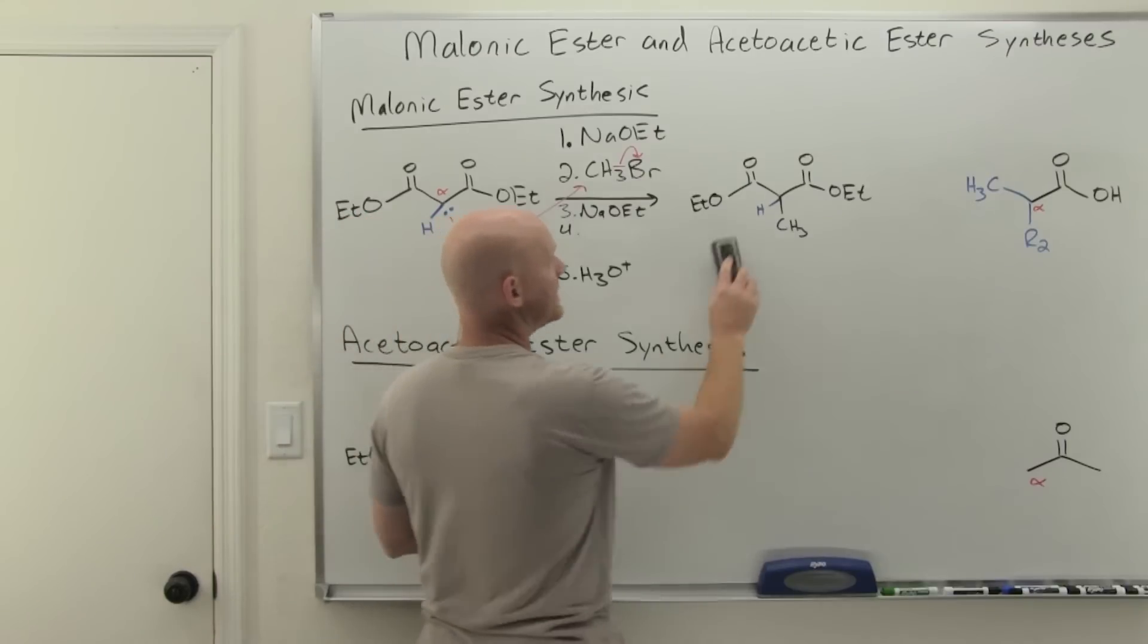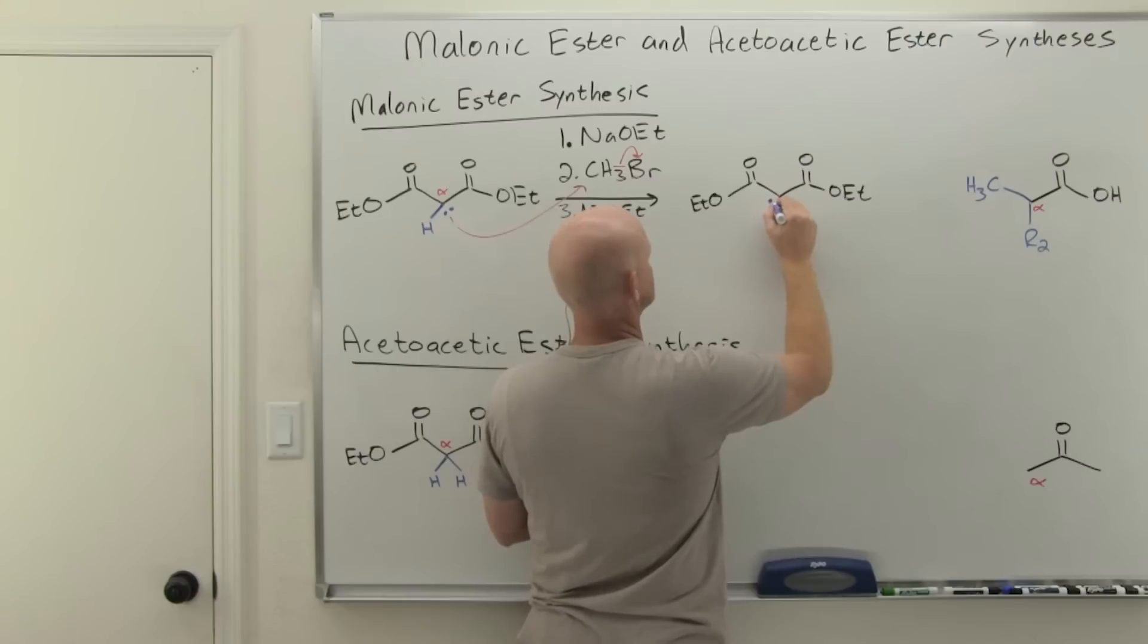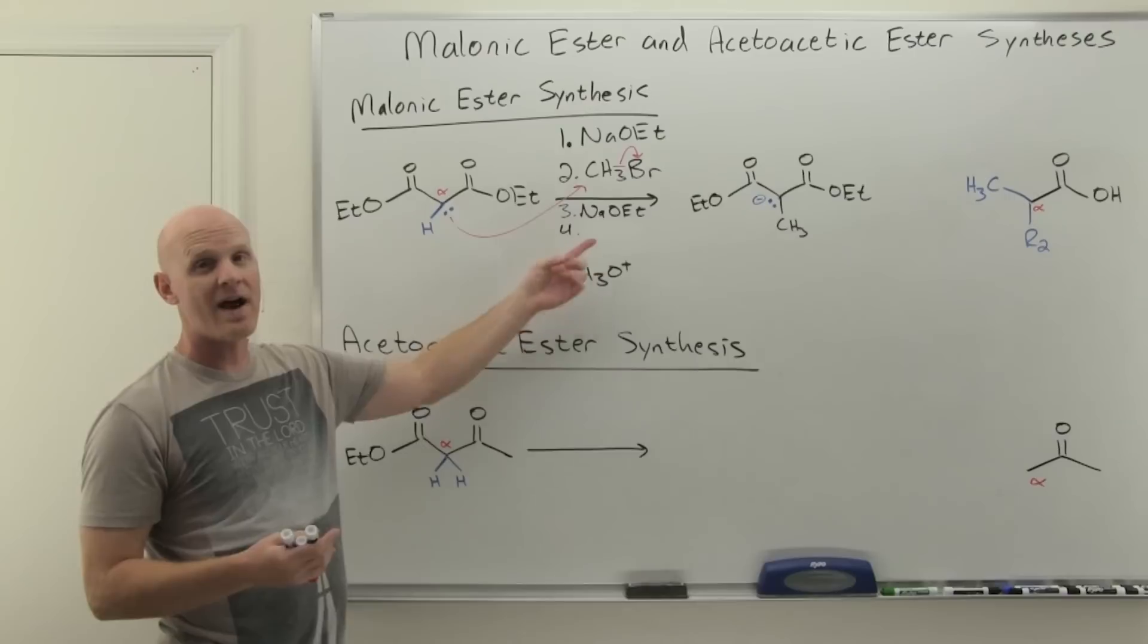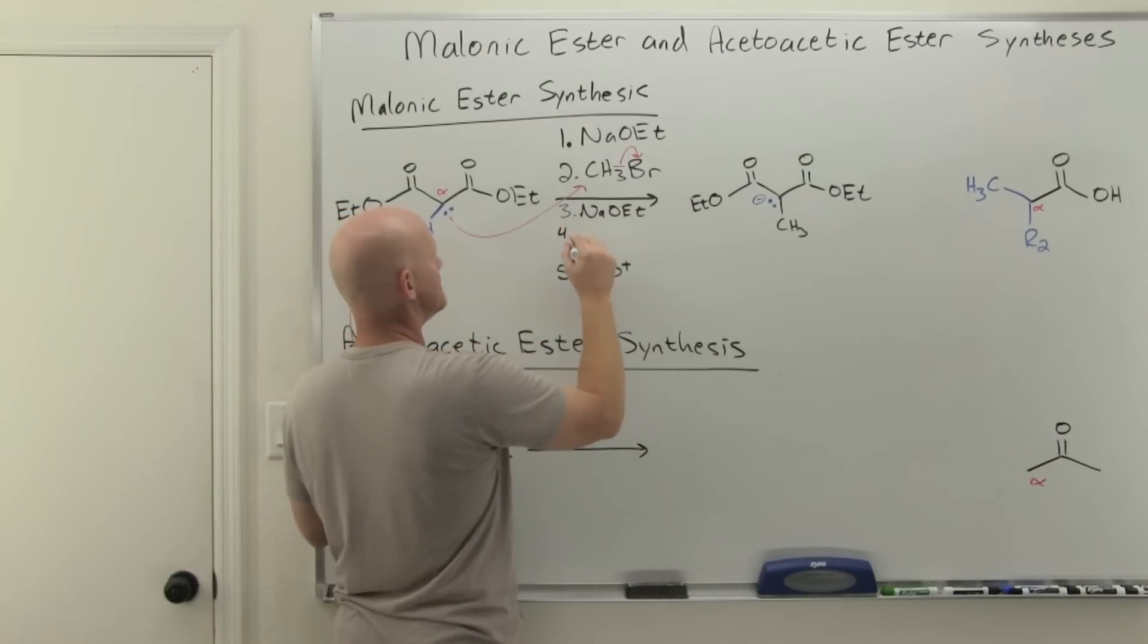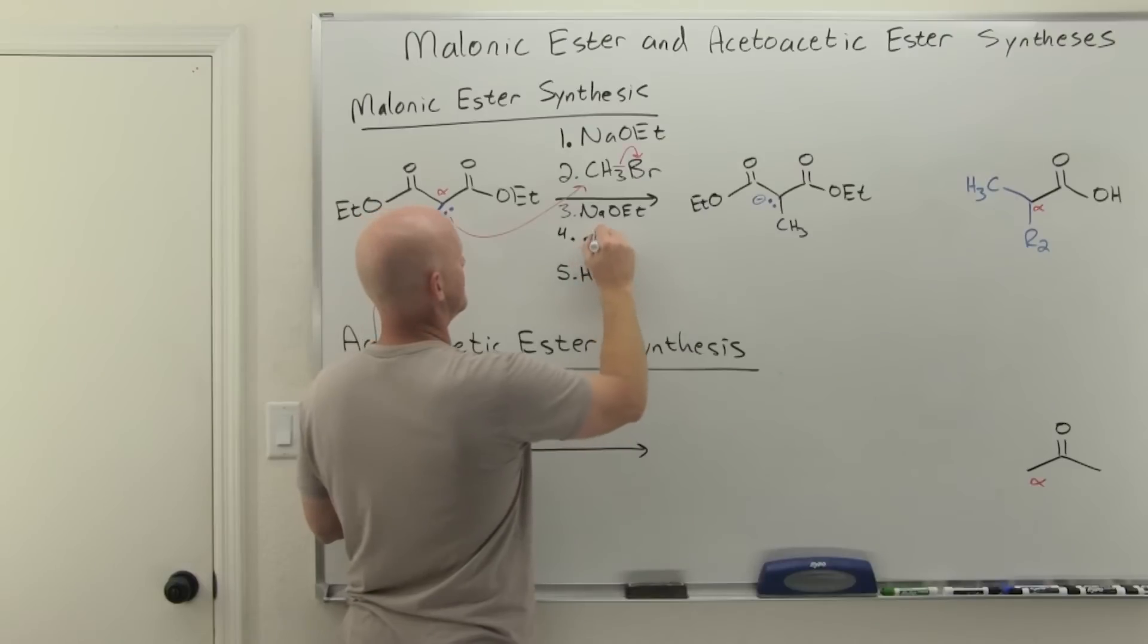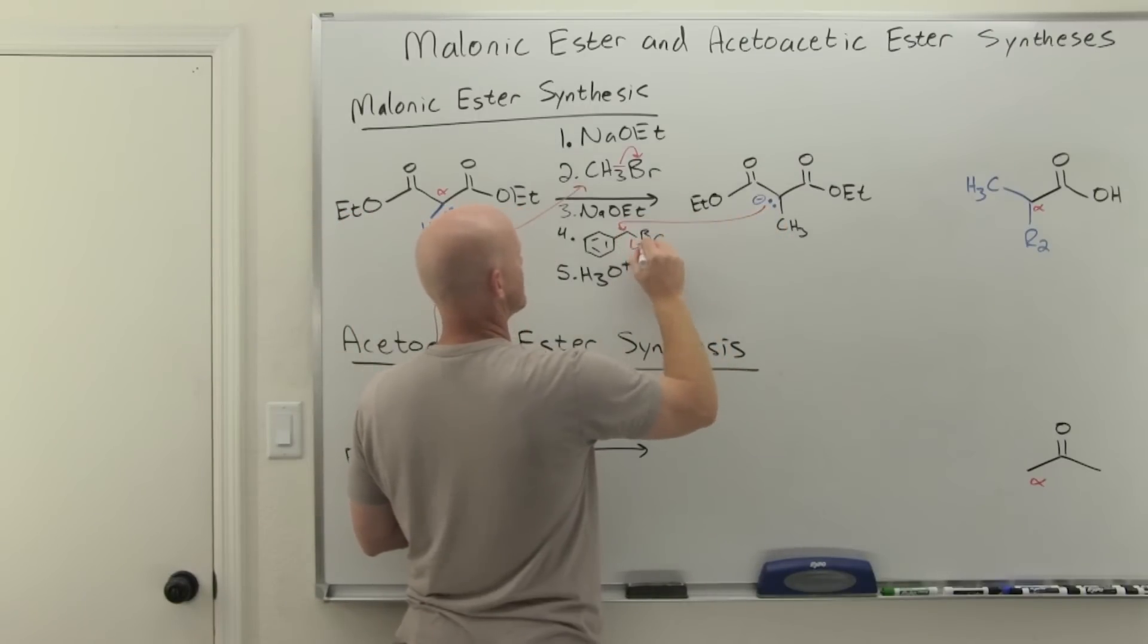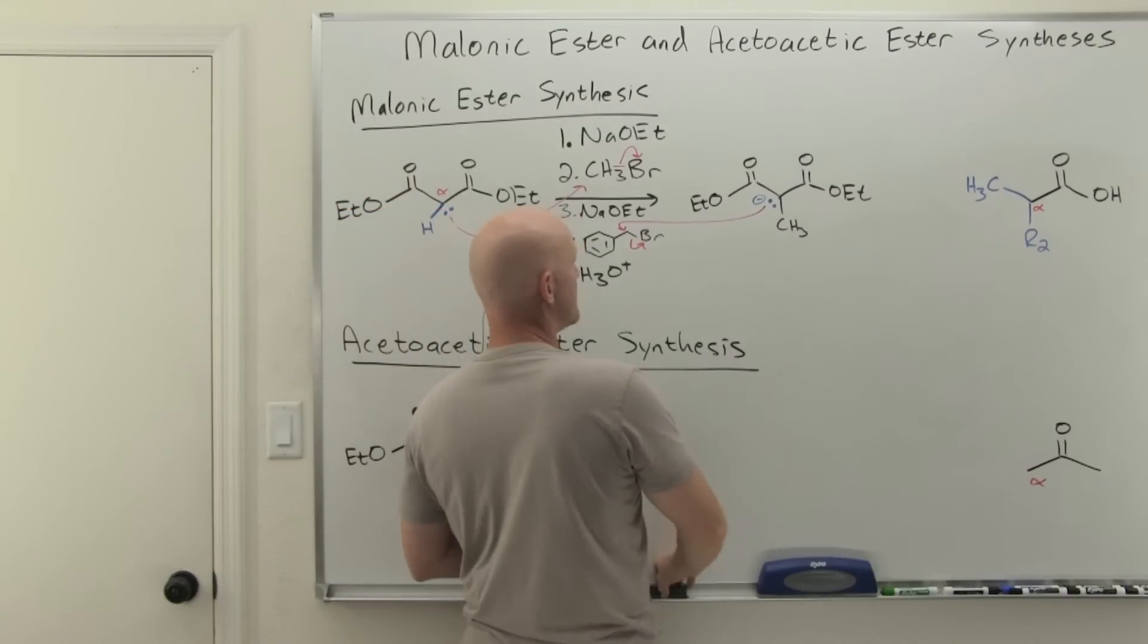So now we've got another enolate and now we have a chance to add another alkyl halide. And so in this case, I'm going to get a little exotic here and I'm going to add benzyl bromide instead. Just, it'll be easy to recognize here. And we're just going to come in again and do backside attack, kick off the bromine, just straight up SN2.